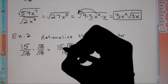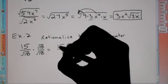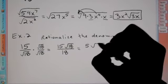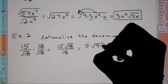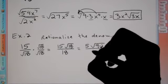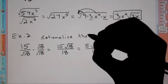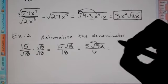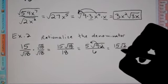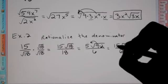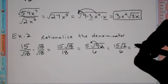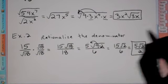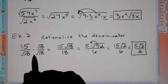We can simplify: 3 goes into both 15 and 18. So 15 over 18 becomes 5 sixths. We can break down 18 to be 9 times 2. Taking the square root of 9 gives 3, times 5 is 15, so we have 15 root 2 over 6. Then dividing top and bottom by 3 gives us 5 root 2 over 2. That's our final answer — one way of doing it is to multiply top and bottom by the root.